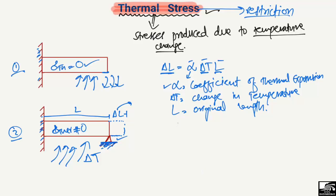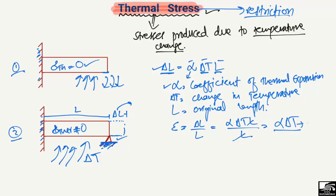We know that strain equals change in length divided by original length. So the thermal strain equals (alpha × delta T × L) divided by L, and L cancels out. Therefore, thermal strain = alpha × delta T.